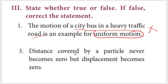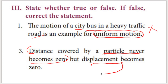It is false — a city bus in heavy traffic is actually an example of non-uniform motion. Next statement: Distance covered by a particle never becomes zero, but displacement becomes zero. This is true. Distance is always positive as long as the body moves. Even if you return to the same starting point, you have covered some distance.